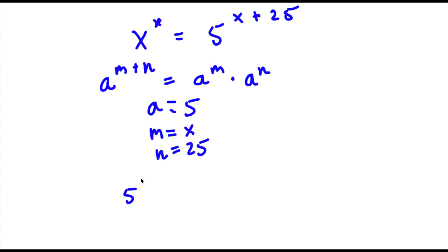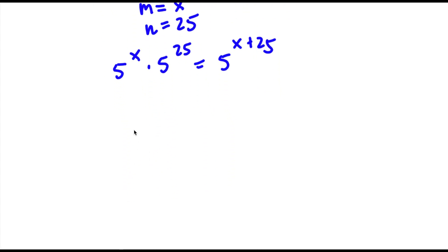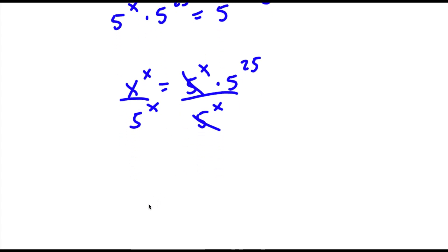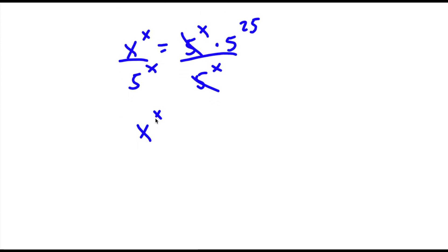So now we have x to the power of x is equal to 5 to the power of x times 5 to the power of 25. Now if I divide both sides by 5 to the power of x, these two cancel out and I will have x to the power of x over 5 to the power of x is equal to 5 to the power of 25.